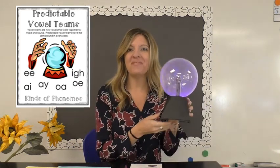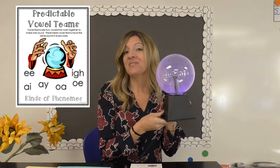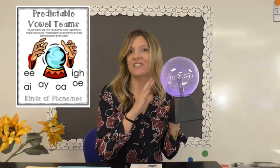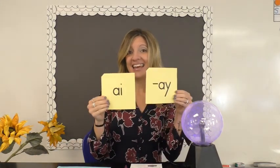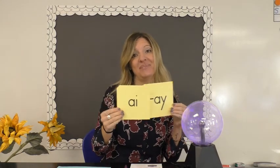Hi, we're back and today we're going to talk about the second predictable vowel team. We know that if something is predictable, you can tell what's going to happen. An example of something predictable is that the sun will set tonight. Last week we talked about the AI and AY predictable vowel teams, and today we're going to talk about the second set of predictable vowel teams: OA and OE.